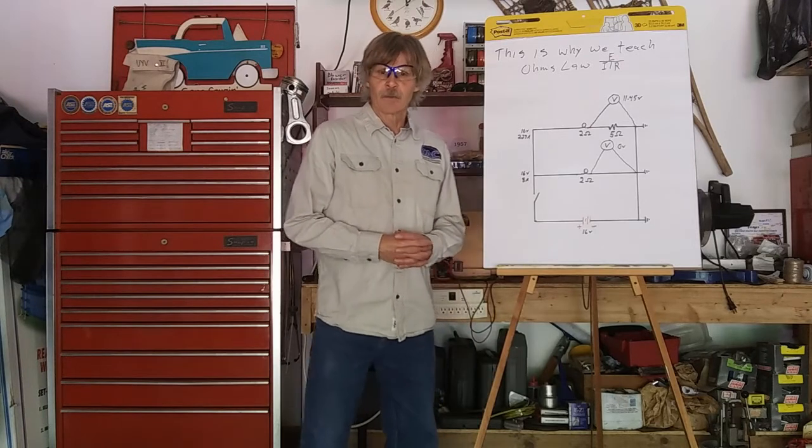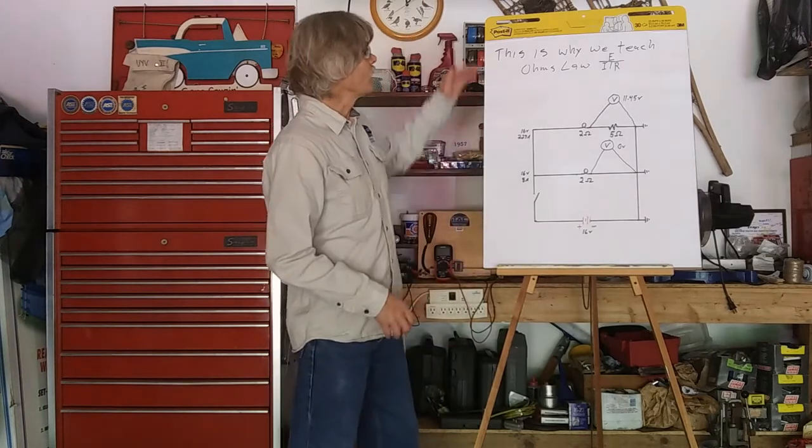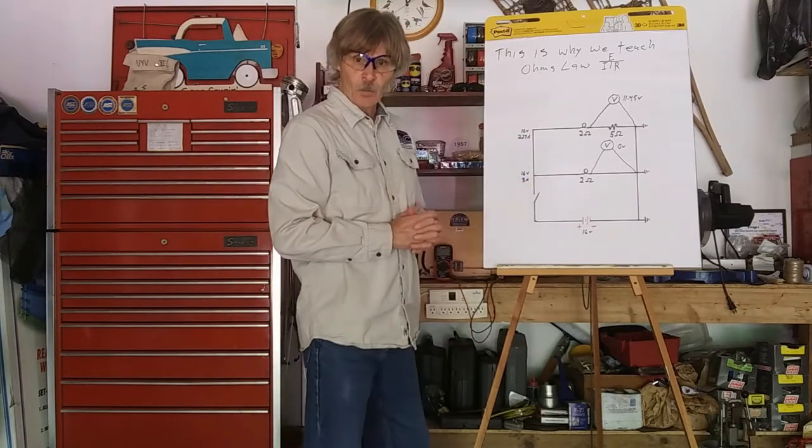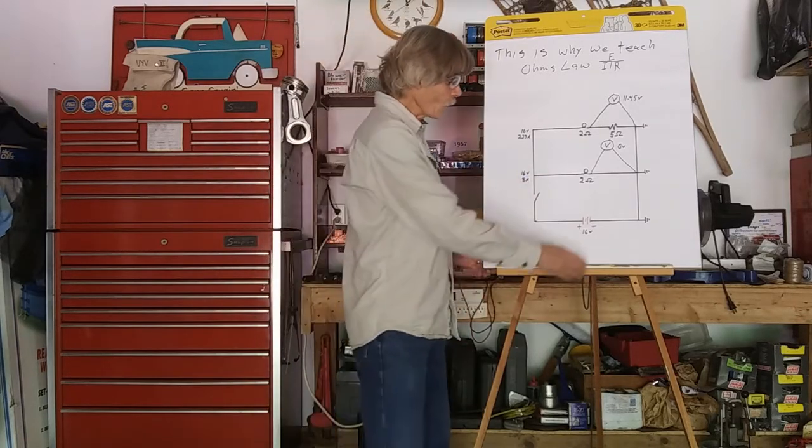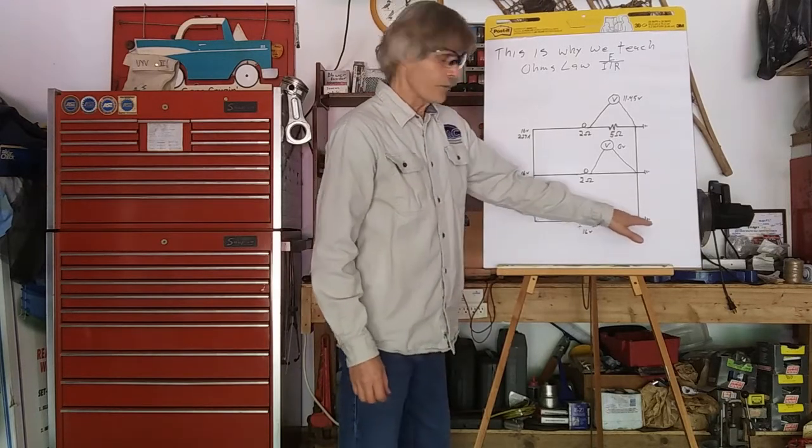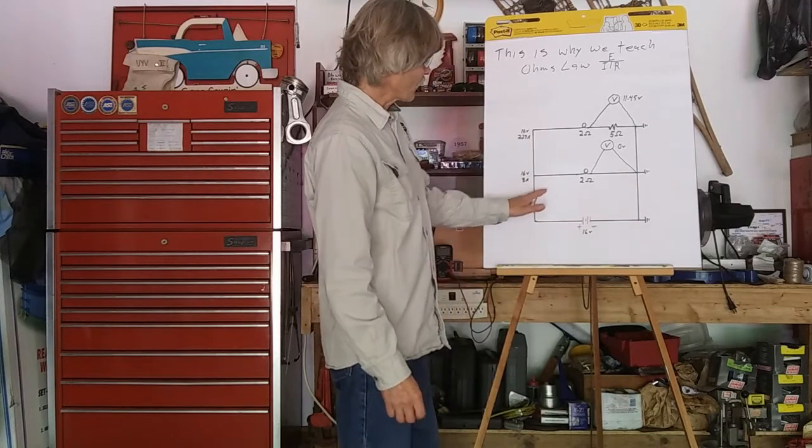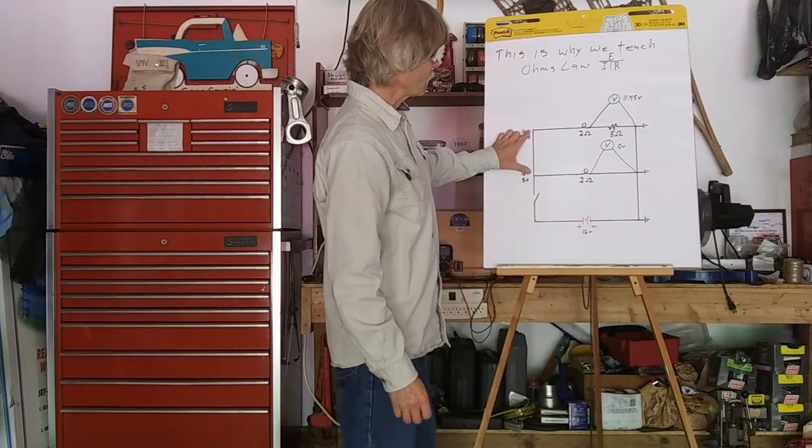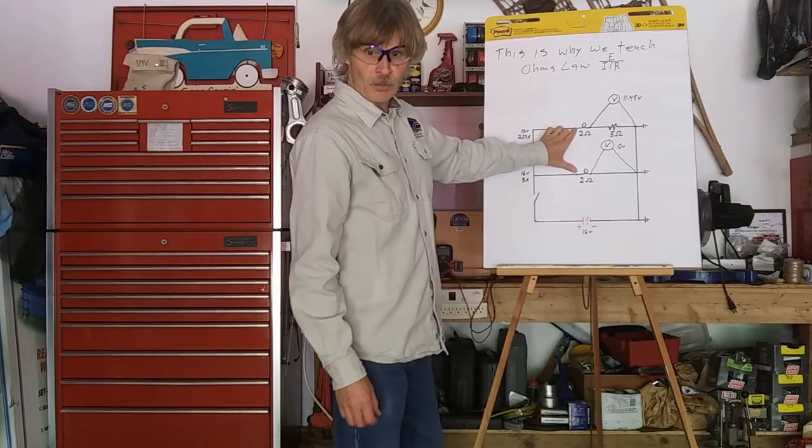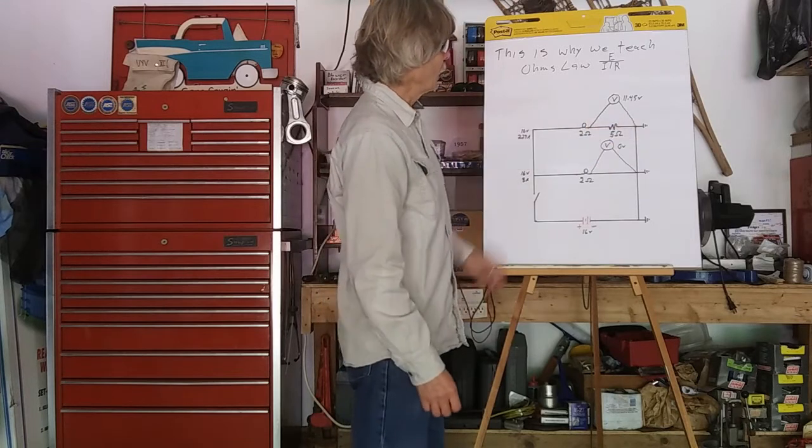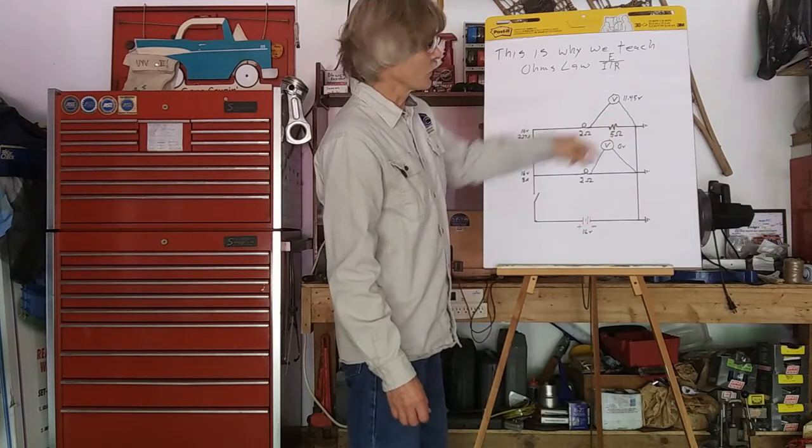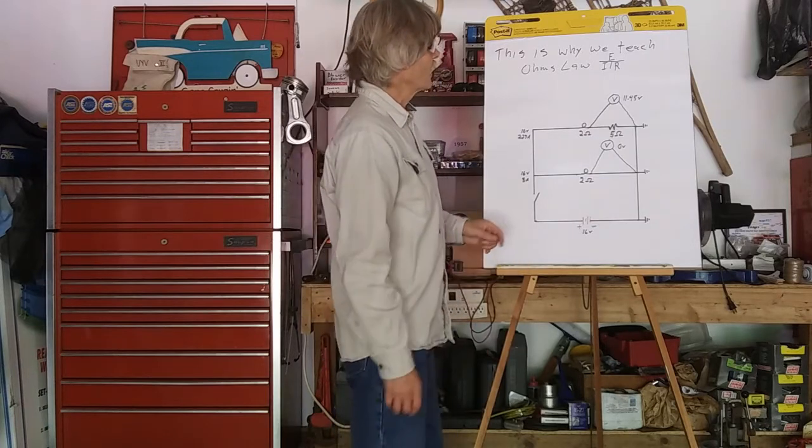So after doing this voltage drop test, hopefully you see why we teach Ohm's Law. This is the circuit that we just worked on right here. We have our 16 volt battery right here, with our positive coming out this way, negative going to ground over here. We have our switch right here, and we have our two parallel circuits coming across here, with our two bulbs in the circuit, going to ground. And you can see on this one, up on top here, we have some resistance in here on the ground circuit.